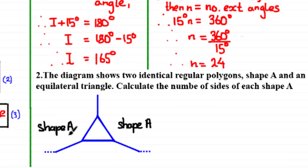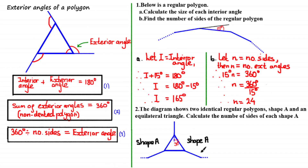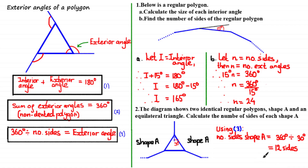As both identical shapes have been joined by an equilateral triangle, we know that all angles inside an equilateral triangle are equal to 60 degrees. Therefore, half of this angle is equal to 30 degrees, which happens to be the exterior angle of shape A. Now that we have the exterior angle, we can find the number of sides using equation 3: number of sides equals 360 degrees divided by 30 degrees, which equals 12. So the number of sides of shape A is 12.